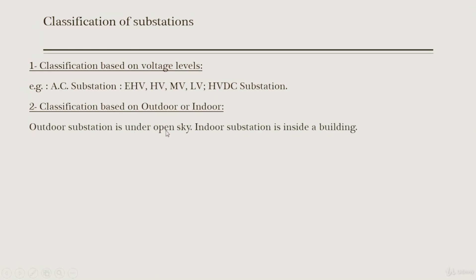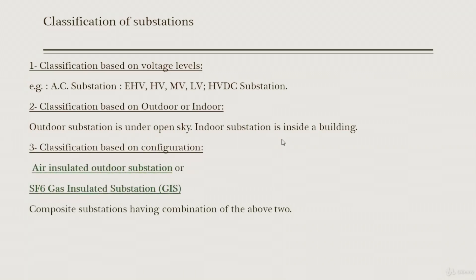The second classification is based on outdoor or indoor installation. A substation can be outdoor — under the open sky in a large open area — or it can be an indoor substation inside a building. We can also classify substations by configuration: air insulated outdoor substations (AIS), SF6 gas insulated substations (GIS), or composite substations combining both.